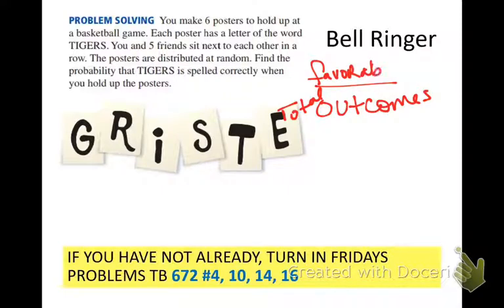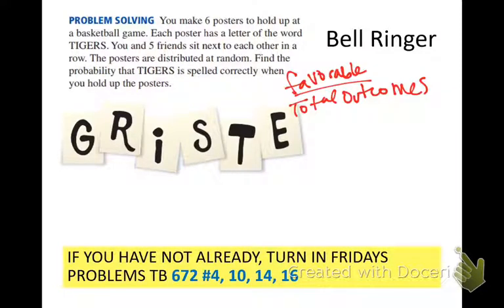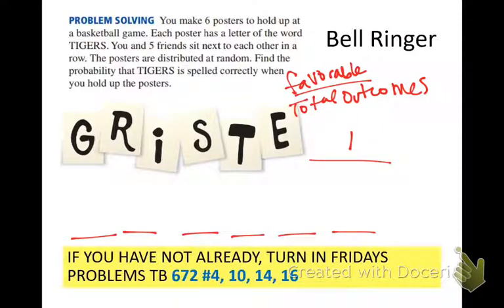I've seen one person get this correct so far — just your class, just yours. So we said there's only one way to spell tigers, right? But if you have six posters, how many options are there? We're talking total outcomes. We're not trying to spell tigers. How many options are there for the first poster?